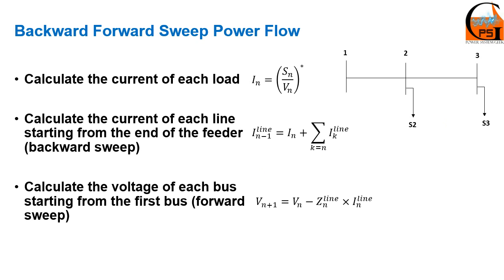In the next step we calculate the voltage of each bus, and here we start from the first bus — the slack bus — whose voltage is always assumed to be 1 per unit at zero degrees. We then move forward to the second bus and all the way to the end of the feeder. To calculate the voltage of each bus we use the voltage of the former bus minus the impedance of the line multiplied by the current passing through it. This is the KVL concept.